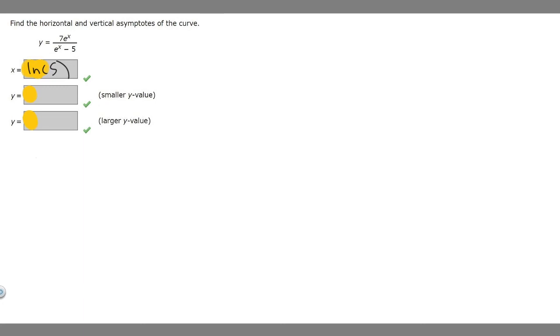But what about the other one? So the other one's going to be when our function is undefined in a range, when it equals 0 over 0, right? So basically when 7e to the x is going to be equal to 0. So if we divide by 7 both sides, we'll get e to the x equals 0.